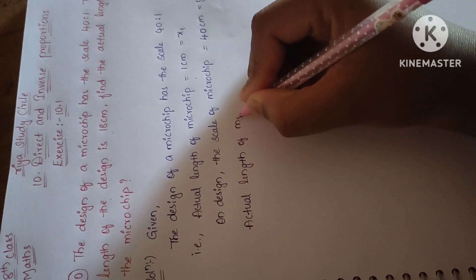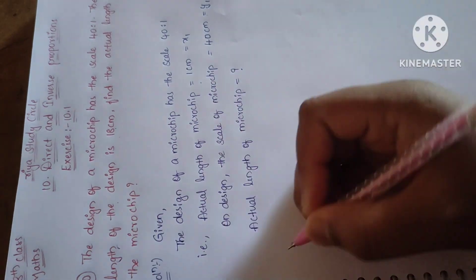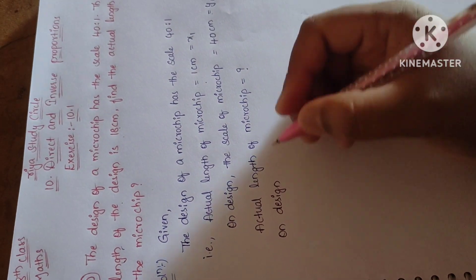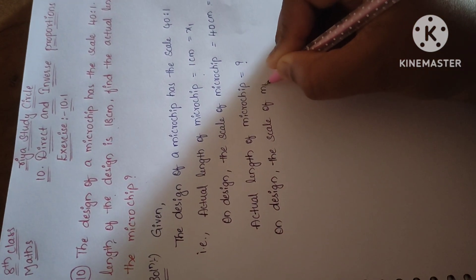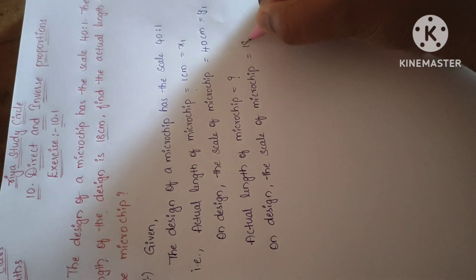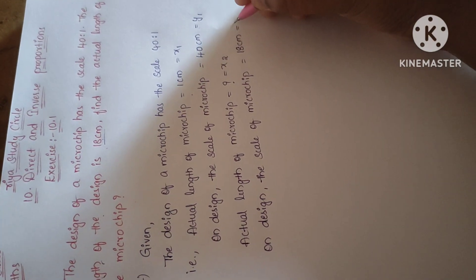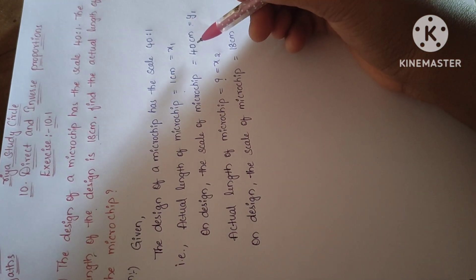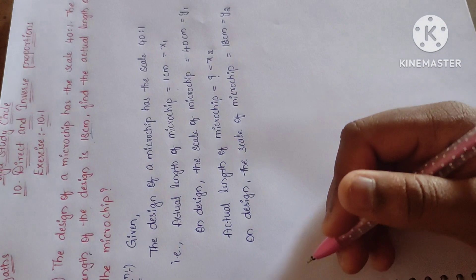The second piece of information is: the length of the design is 18 centimeters. The actual length of the microchip we have to find is x2, and the design length given, 18 centimeters, is y2. We take the actual lengths of both microchips as x and the design scales of both microchips as y. So x1 = 1 cm, x2 = unknown, y1 = 40 cm, and y2 = 18 cm.